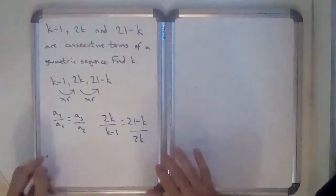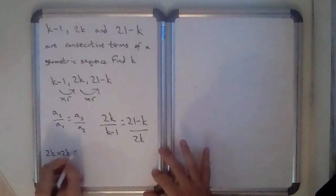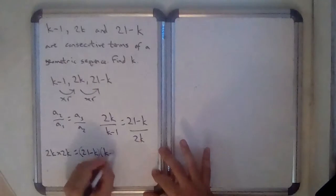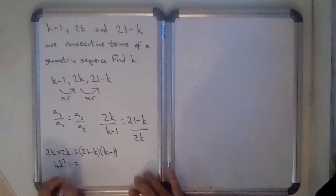So I'm going to cross-multiply. So 2k times 2k equals 21 minus k times k minus 1. So 4k squared equals...